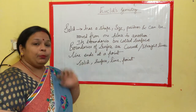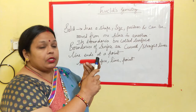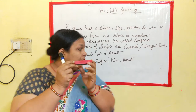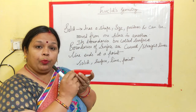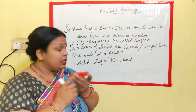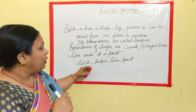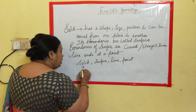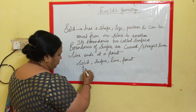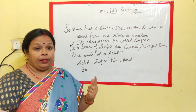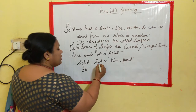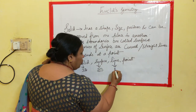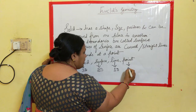So here a slight curve is there, and here also a slight curve you can see in the boundaries, or a straight line. So what it says is that the boundaries of a surface can be a curve or a straight line. We know all these things from our previous classes also and we are just revising it with deep thinking. We know that the line ends at the point.